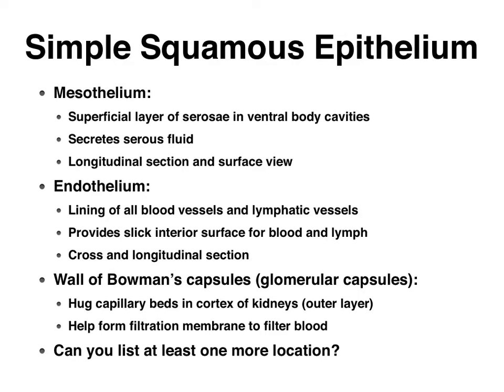There will be three presentations that cover the simple squamous epithelial tissue. In the first presentation, I will cover what mesothelium is, which is the most superficial layer of the serosa in your ventral body cavities. These include your pleural cavities, your pericardial body cavity, and your abdominal pelvic body cavity. In the next presentation, I'll focus on endothelium, which is the name of the simple squamous epithelial layer that forms the lining of all of our blood vessels and also the lymphatic vessels.